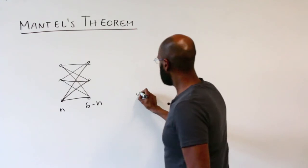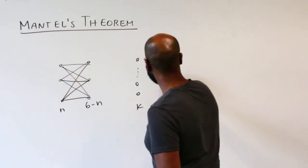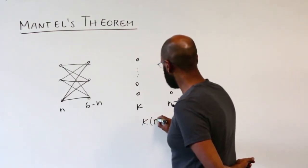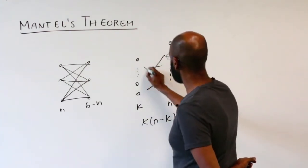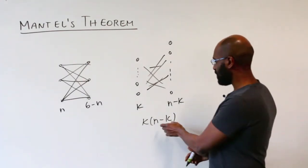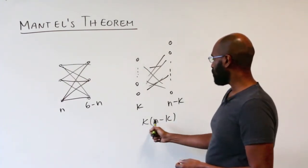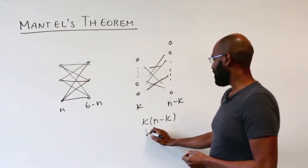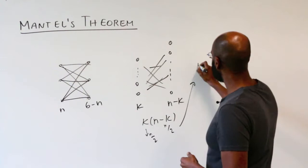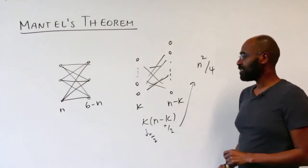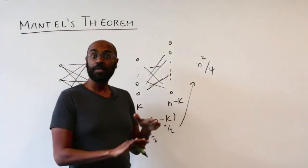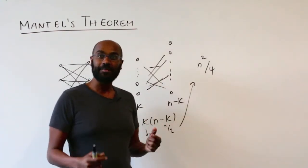What would this look like in general? We might have k vertices on one side, and if n is the total number of vertices, we'd have n minus k on the other side, giving k times (n minus k) edges. To maximize, we make these two values equal, which happens when k is precisely n over two. So for bipartite graphs, the maximum number of edges is n squared over four. It turns out, miraculously, that this is actually an upper bound period, and that statement is Mantel's theorem.